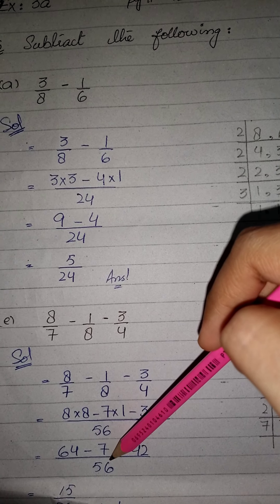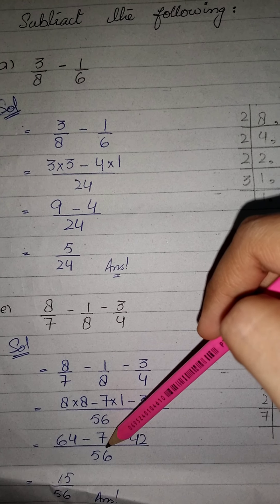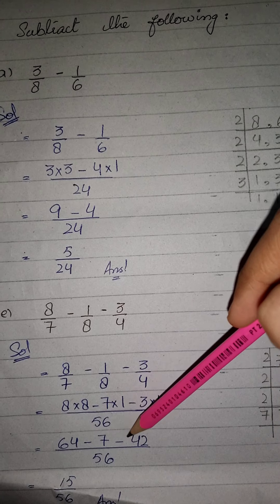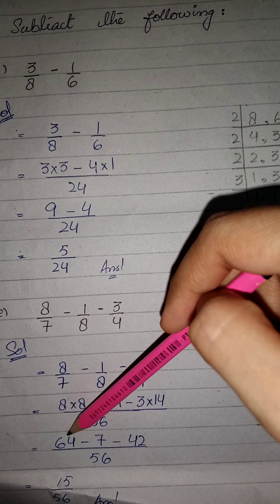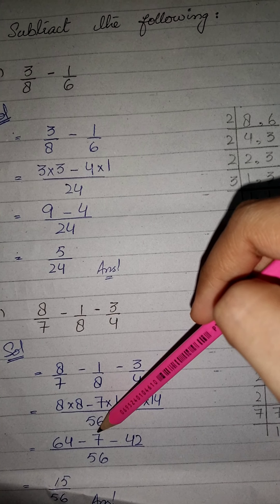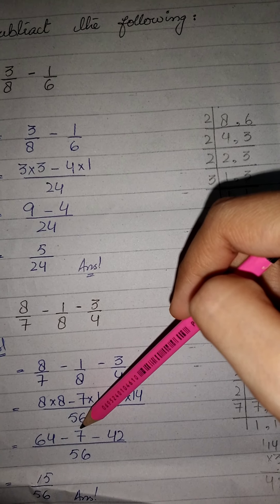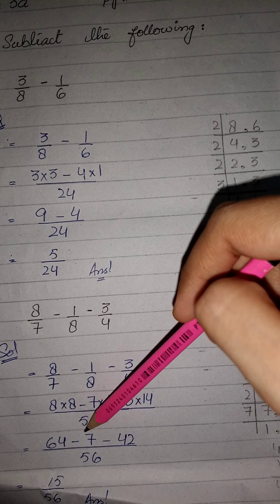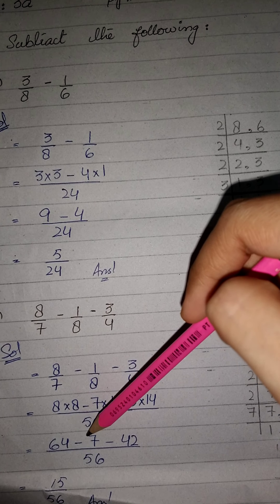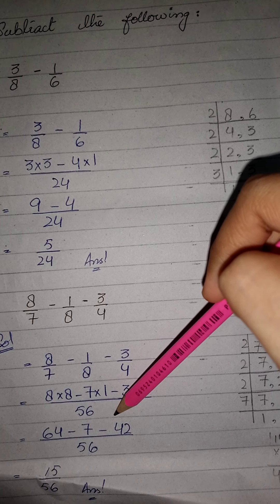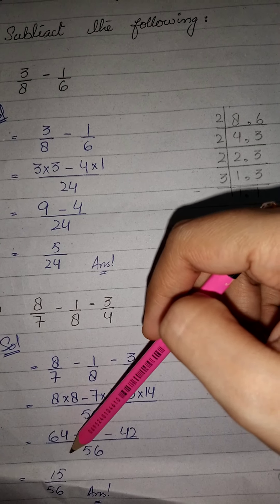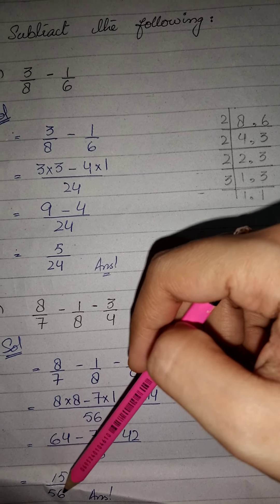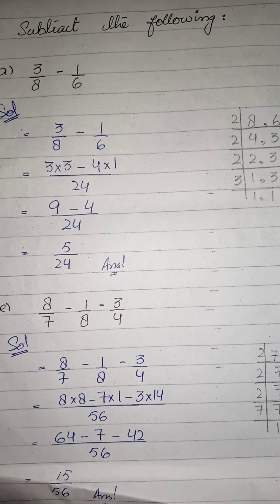اور یہ نیچے 56 denominator میں ہے۔ اب 64 میں سے 7 کو minus کریں گے، پھر جو answer آئے گا اس میں سے 42 کو minus کریں گے، تو ہمارے پاس end میں بچے گا 15۔ تو 15 upon 56 یہ ہمارا answer ہو گیا۔